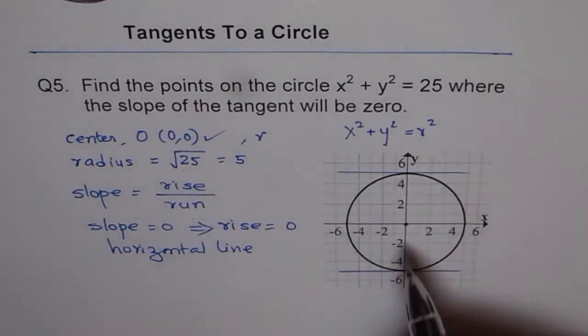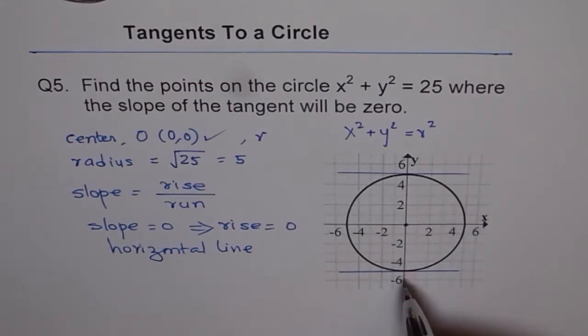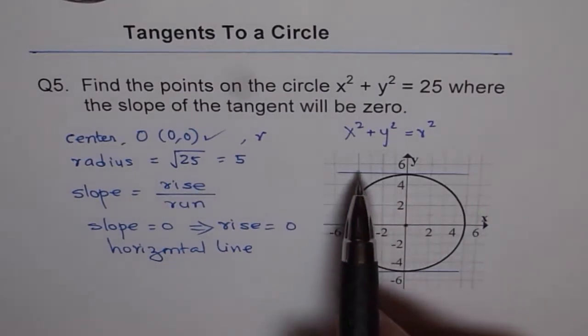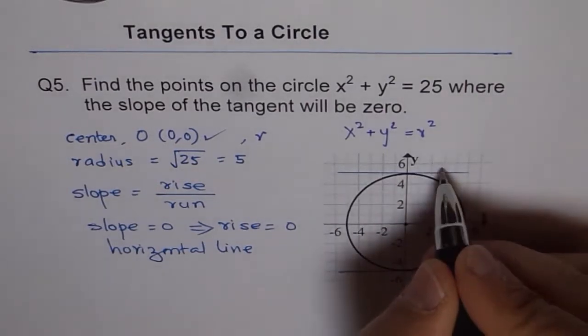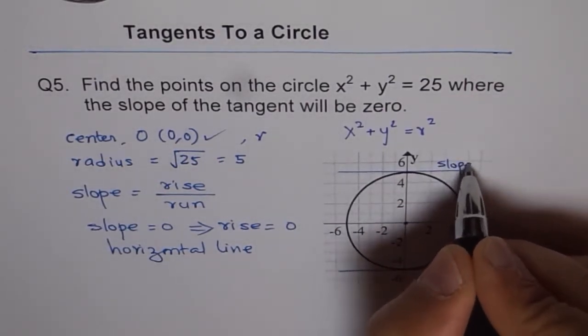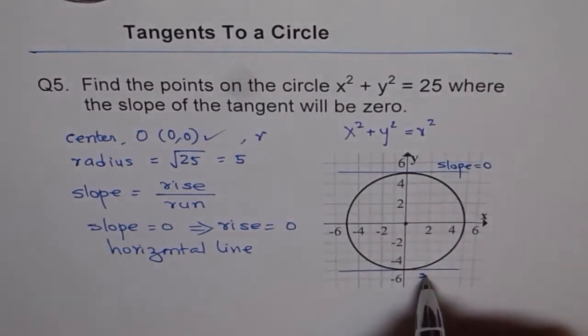And so we found that there are two points on the circle where horizontal line, that means a line with slope 0. So these are the lines which are horizontal and their slope is 0.